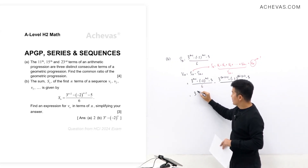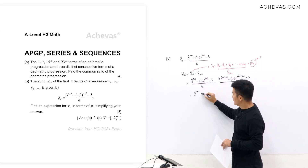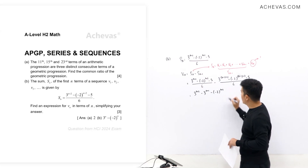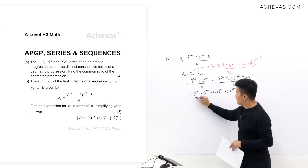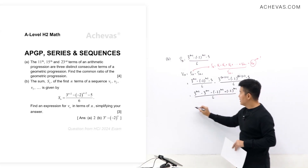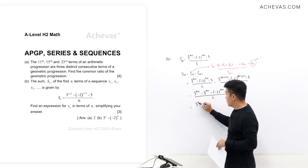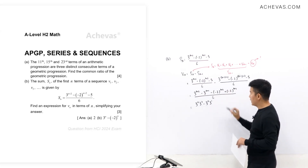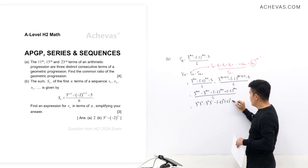Combining over the common denominator of 6, we get: 3^(n+2) − 3^(n+1) − (−2)^(n+2) + (−2)^(n+1). The −5 and +5 cancel. We then rewrite as 3^n · 3² − 3^n · 3¹ − [(−2)^n · (−2)² − (−2)^n · (−2)¹], all divided by 6.